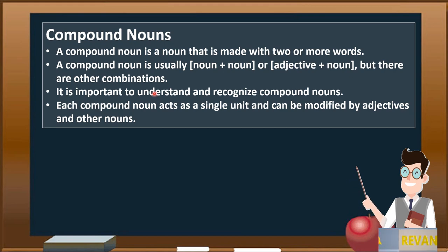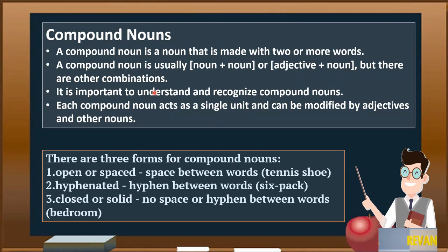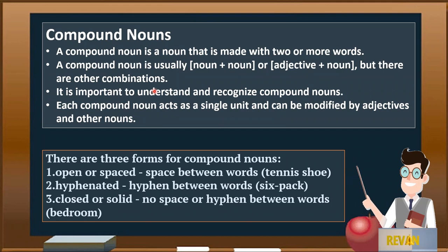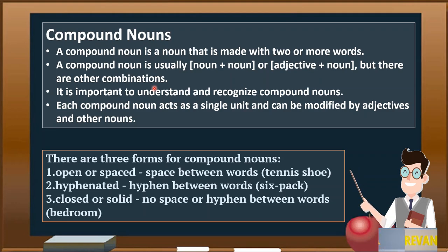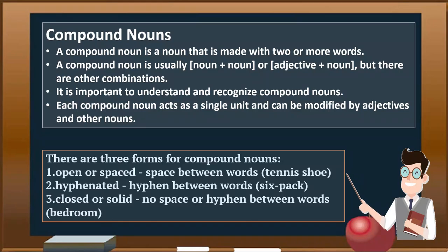Compound nouns can be modified by adjectives or other nouns. There are three forms when compound nouns are created. The first is open or spaced — with a space between words. The second is hyphenated — with a hyphen between words. The third is closed or solid — with no space or hyphen between words, like 'bedroom,' where 'bed' and 'room' are combined without any space or hyphen.